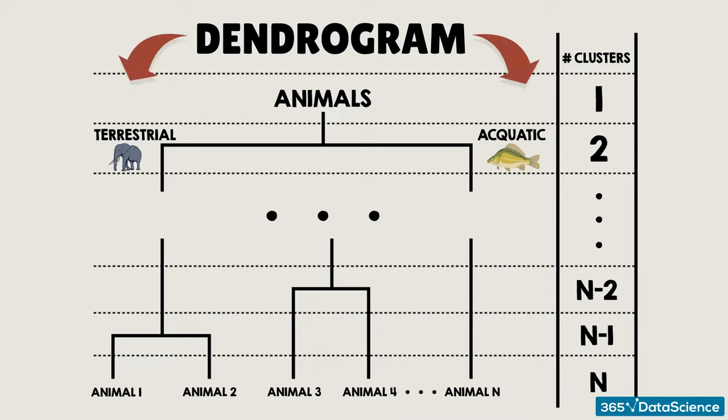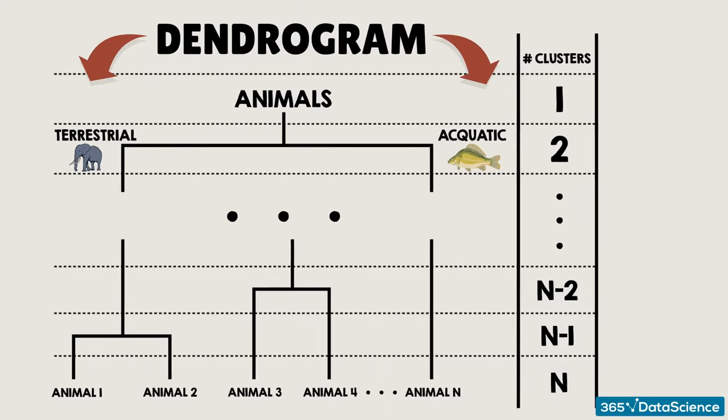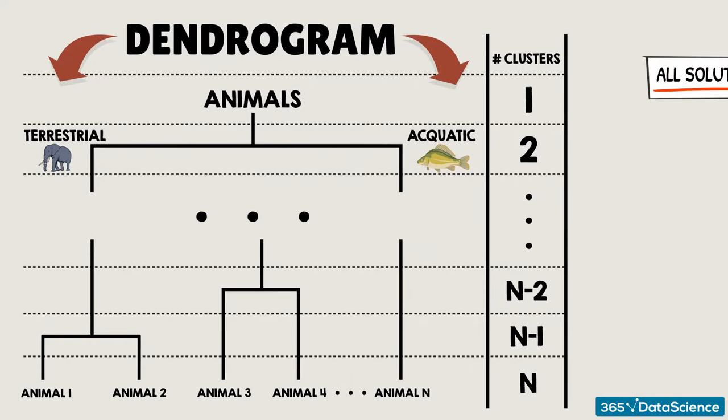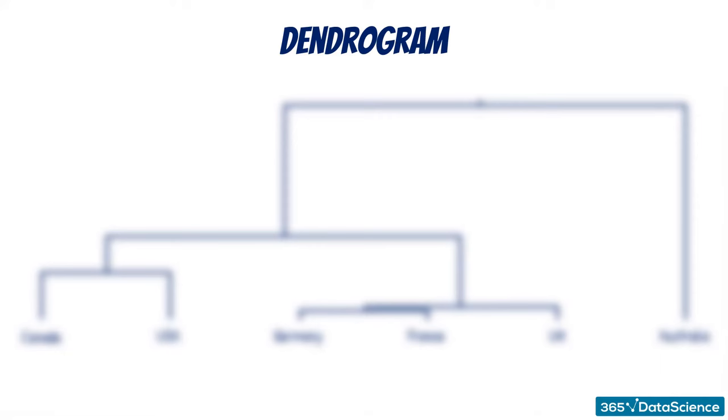A line starts from each observation. Then the two closest clusters are combined, then another two, and so on, until we are left with a single cluster. Note that all cluster solutions are nested inside the dendrogram. Let's explore a dendrogram and see how it works.